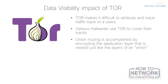This onion routing is accomplished by encrypting the application layer of a communication protocol stack that is nested just like the layers of an onion. The Tor client encrypts the data multiple times and sends it through a network or circuit which includes randomly selected Tor relays.